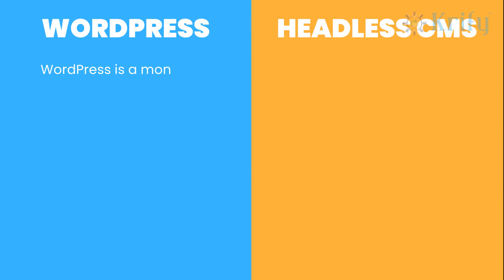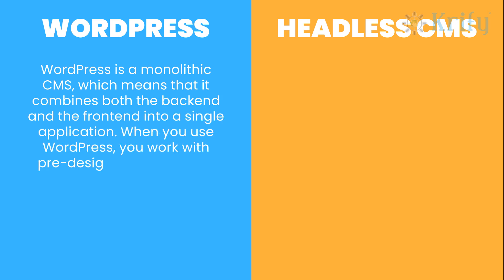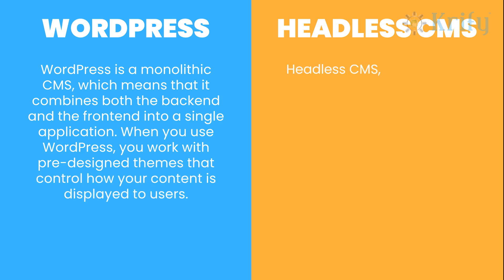WordPress is a monolithic CMS, which means that it combines both the back-end and the front-end into a single application. When you use WordPress, you work with pre-designed themes that control how your content is displayed to users. Headless CMS, on the other hand, follows a decoupled architecture.